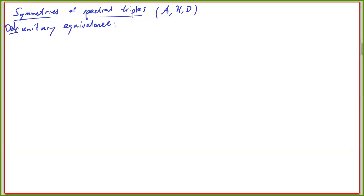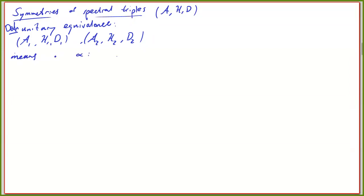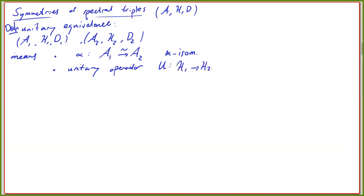Unitary equivalence is defined as follows: two spectral triples (A₁, H₁, D₁) and (A₂, H₂, D₂) are unitarily equivalent if there exists a star isomorphism α: A₁ → A₂, a unitary U: H₁ → H₂ such that α(a) = U a U* for all a, and D₂ = U D₁ U*. These are the two kinds of properties — you intertwine the data by this unitary equivalence — and then you say they are actually equivalent.